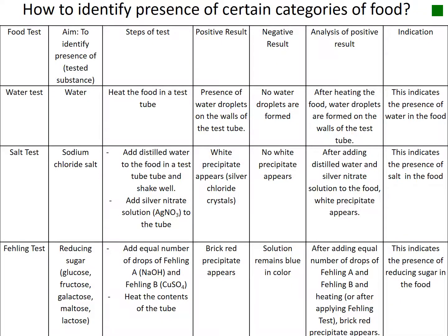Lipids have no intermediate form. The complex form is fats, and the simplest form is fatty acids and glycerol. For food tests: the water test is done to identify the presence of water — heat the food and observe; water droplets indicate a positive result, no droplets indicate a negative result. The salt test identifies the presence of sodium chloride — add distilled water and shake the tube well.